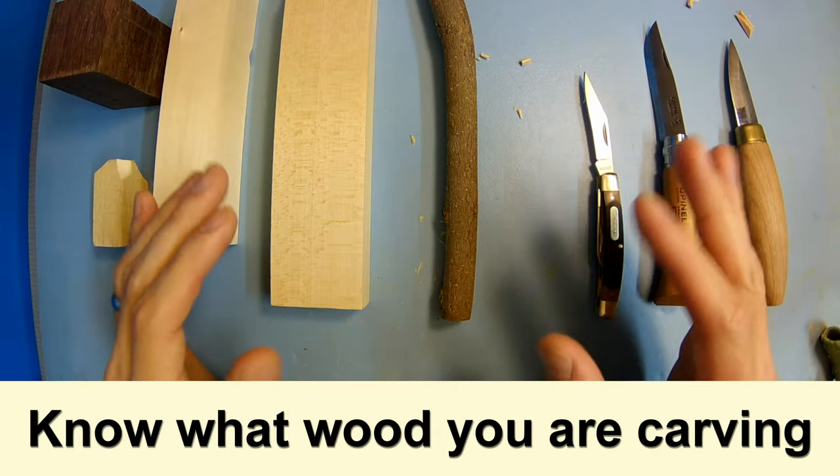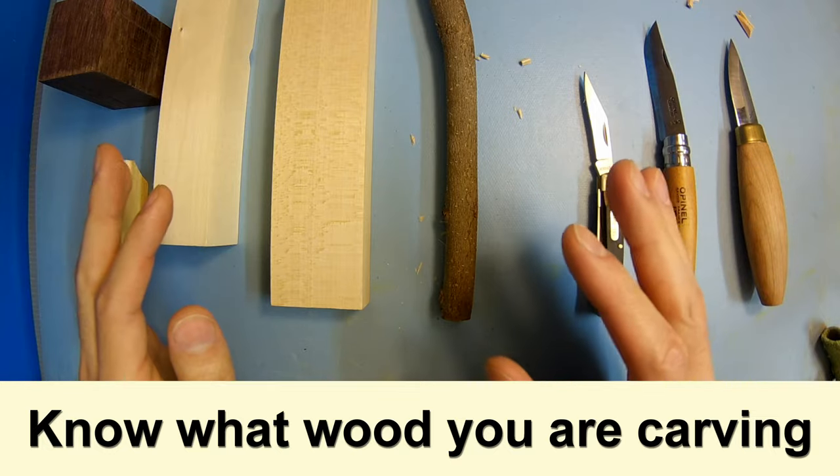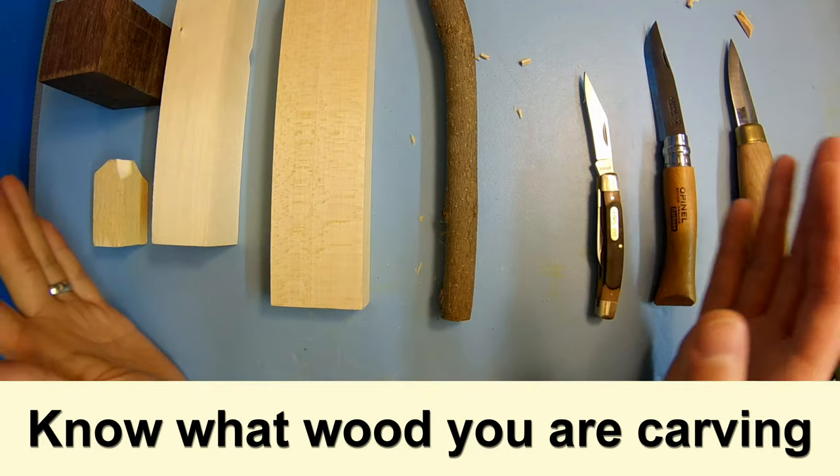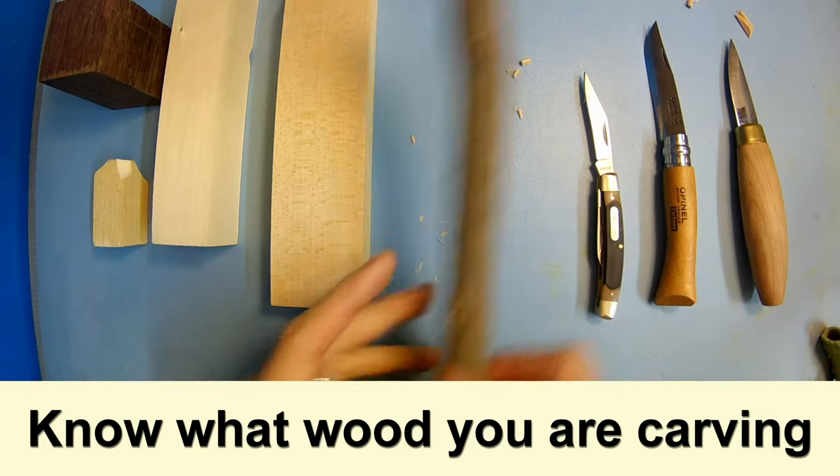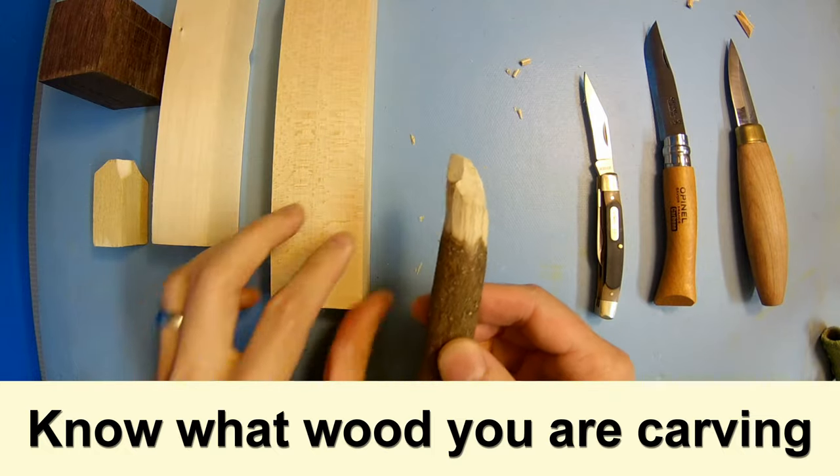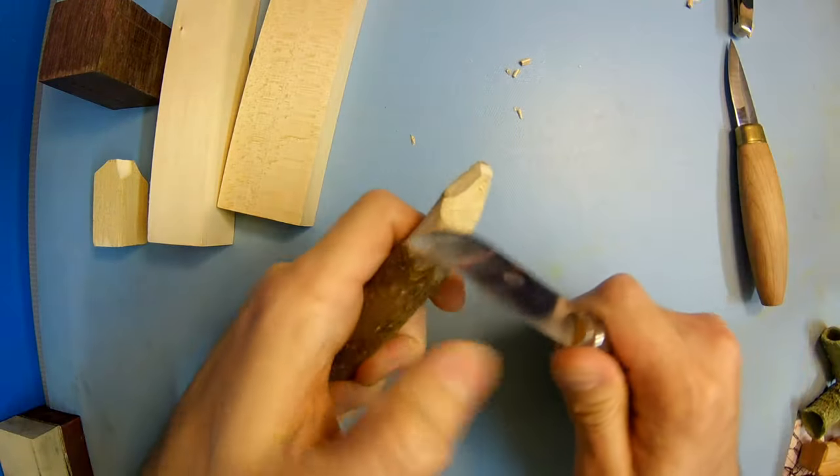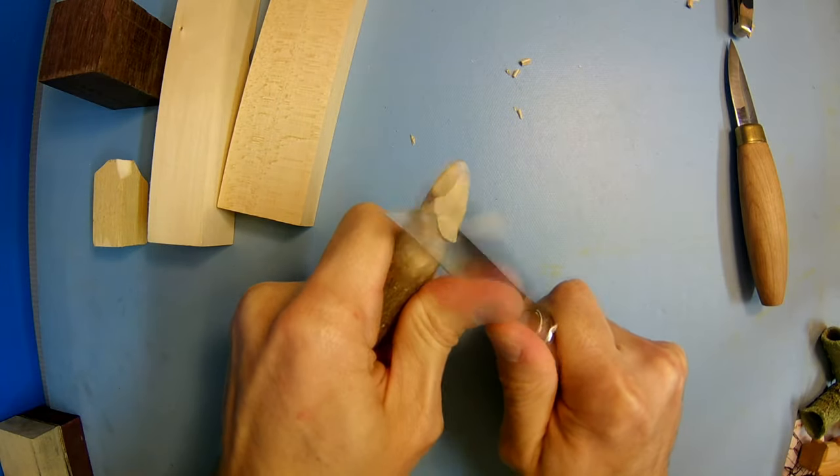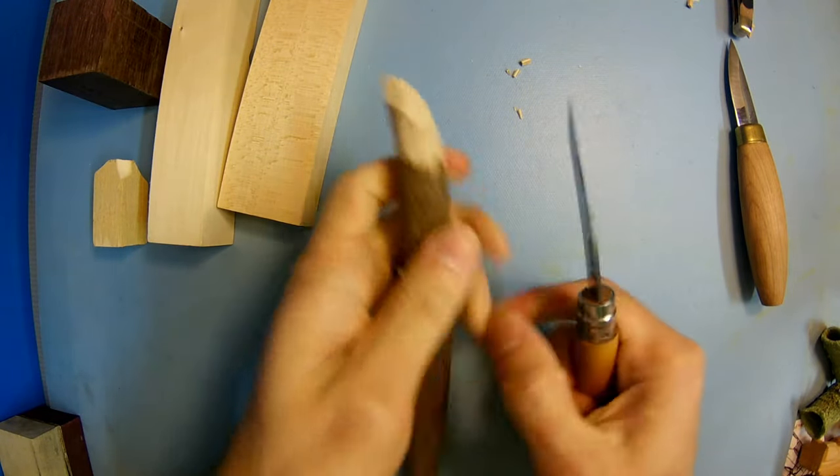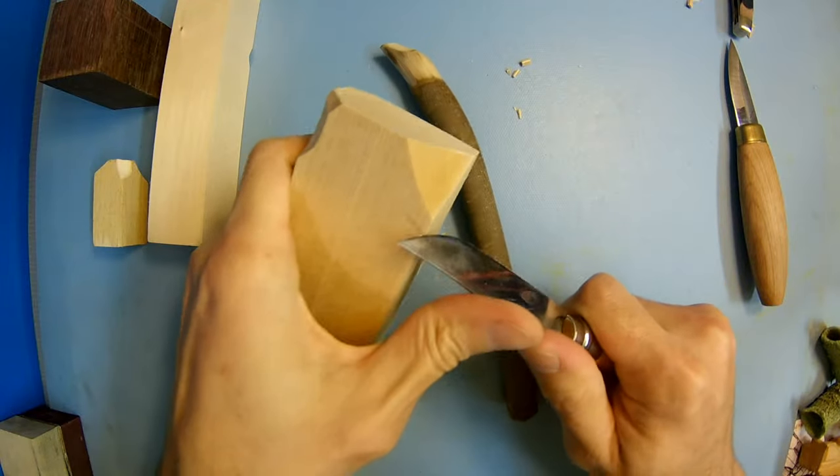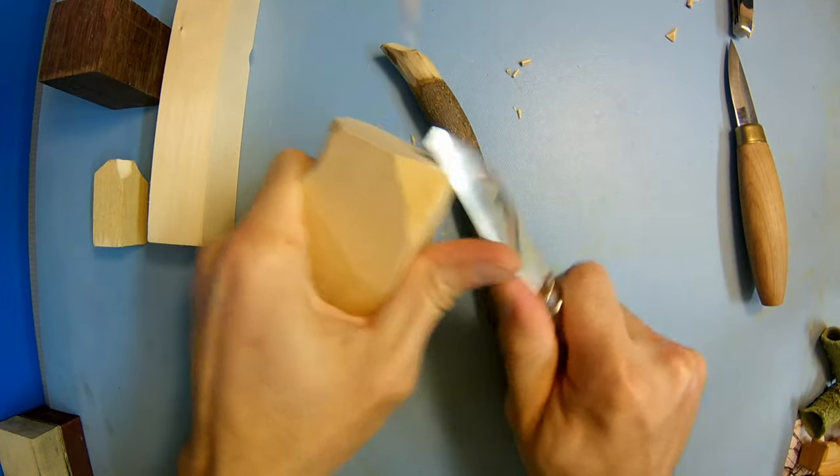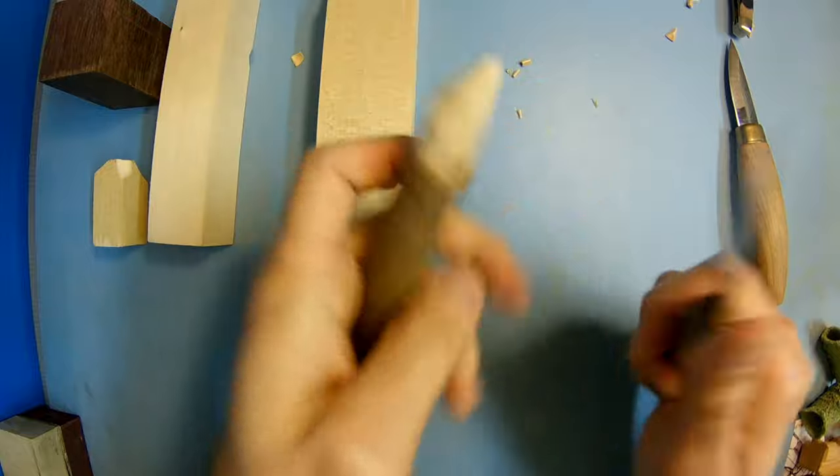You're going to want to keep in mind what kind of wood you are carving. Some woods are harder to carve than others. This one is a piece of magnolia that I have from the backyard - it is not necessarily an easy piece of wood to cut, especially when compared to basswood. Basswood is much easier to carve than magnolia, it's just a denser wood.